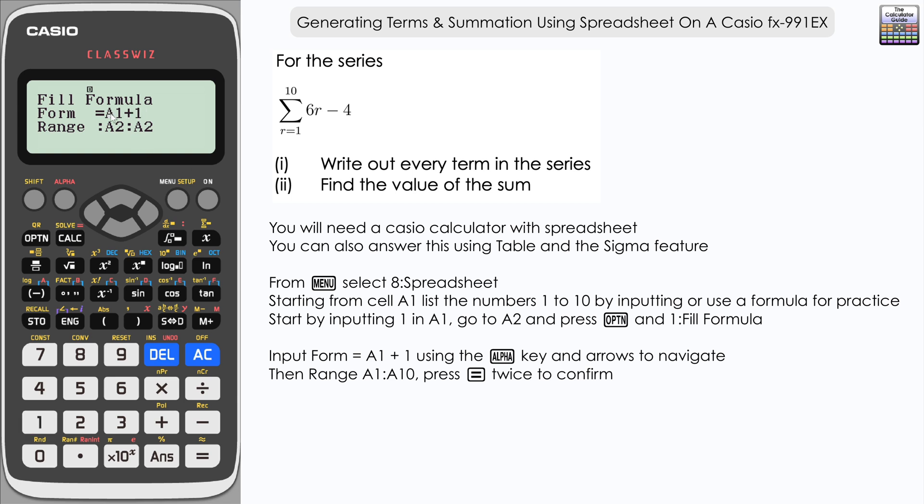And then we need to select the range for which this formula is going to populate those cells, so it's A2 and then we're going to change the last cell to A10, so from A2 to A10, equals for that and then equals again to confirm. And then if we scroll down column A here we can see that has populated that with the numbers one to ten. So let's scroll back up to the top.